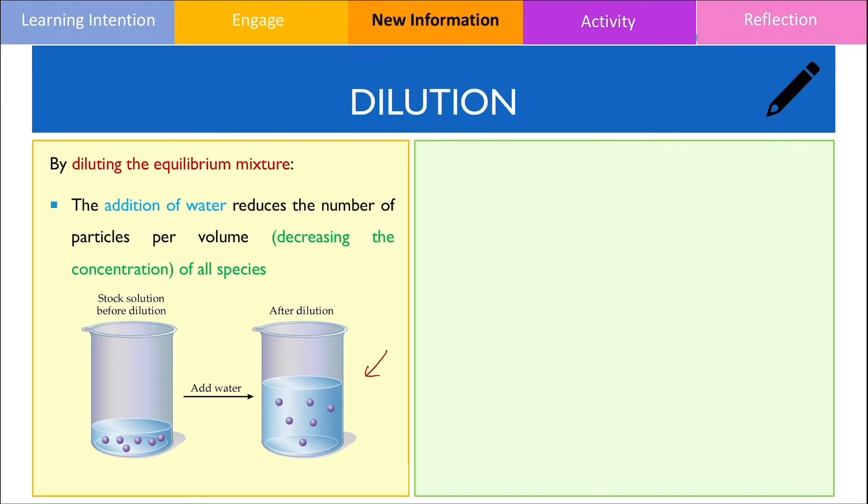Diluting the system affects the concentrations of both reactants and products present in the mixture. Let's use an example to see how dilution disrupts equilibrium.